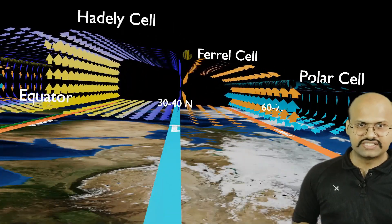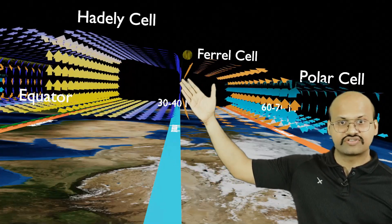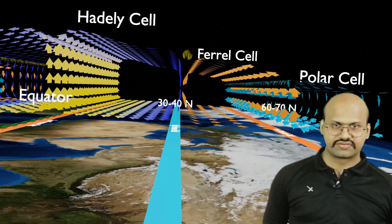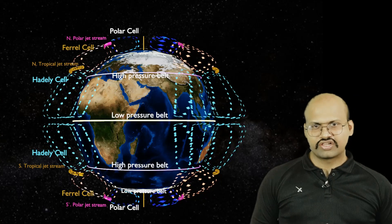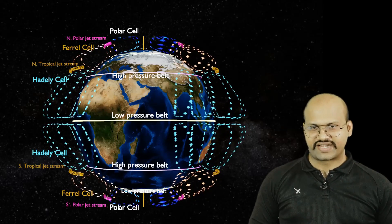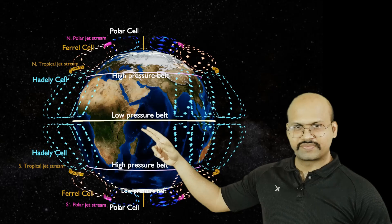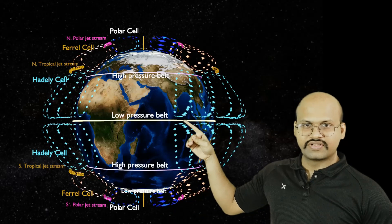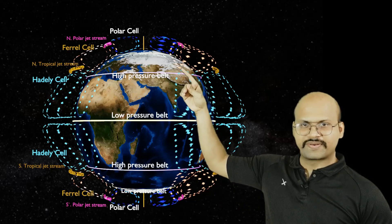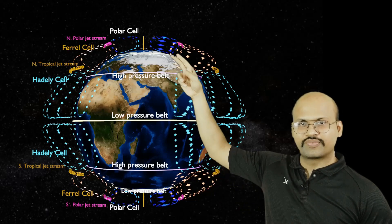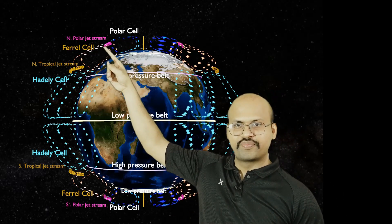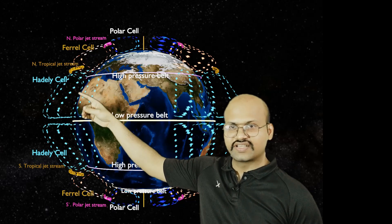This is the side view of these cells — we can see all three cells moving in harmony. The Hadley cell descends at 30–40 degrees, the Ferrel cell also descends there, then rises at the polar front with the polar cell, and all three circulations continue together. When we see all three cells on a spherical Earth, we get a clear understanding of their distribution. The Hadley cell moves from the equatorial low pressure belt toward the tropical high pressure belt; the Ferrel cell moves from there to the polar low pressure belt; and then the polar cell completes the circulation. Polar jet streams are at the Ferrel–polar cell margin and tropical jet streams at the Ferrel–Hadley cell margin.